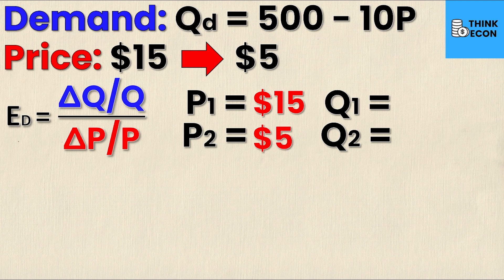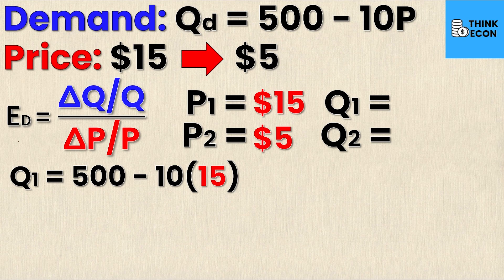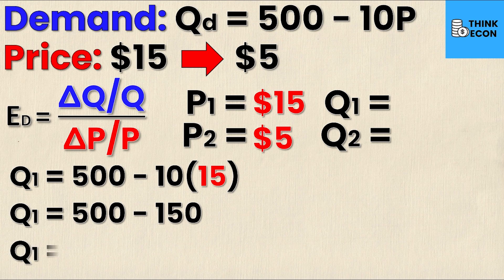But I don't have my Q1 or my Q2, all I have is my demand function. So to find Q1, I will substitute P1 into the demand equation and solve for Qd. When I do that I get something that looks like this: 500 - 10 × 15. Simplifying further I get Q1 is equal to 500 - 150, and then obviously Q1 must be 350.